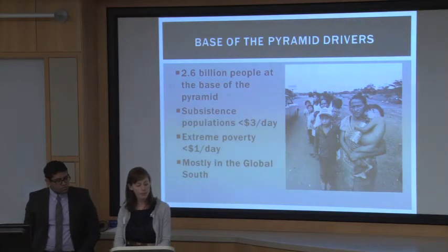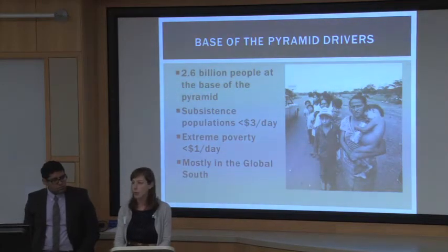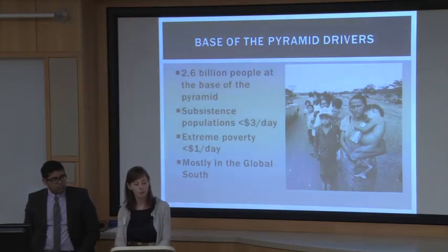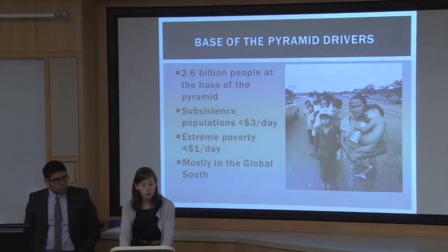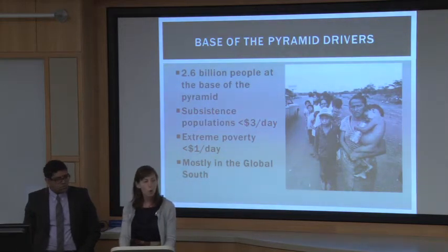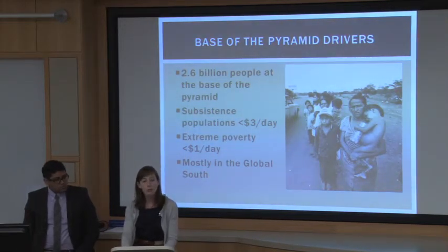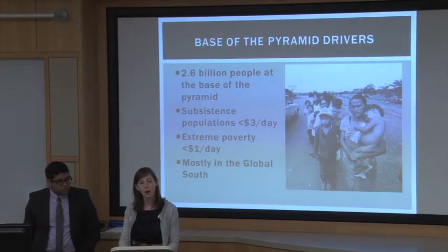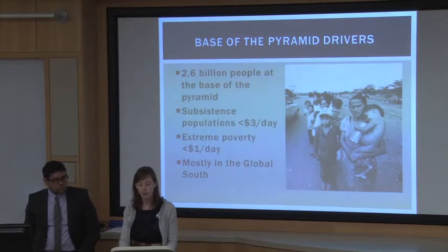Extreme poverty is classified as living on less than one dollar per day and is what we usually talk about when we refer to the bottom billion in popular health and economic literature. People living in extreme poverty lack basic necessities such as sufficient food, clean water, and adequate shelter. War, civil strife, and natural disasters have displaced them from their homes and their families, forcing them to start their lives over often in unfamiliar places with unfamiliar people.